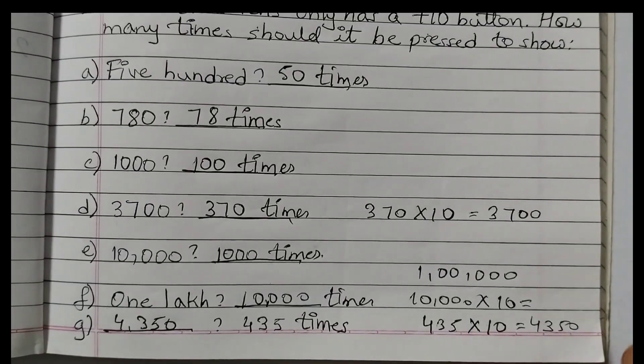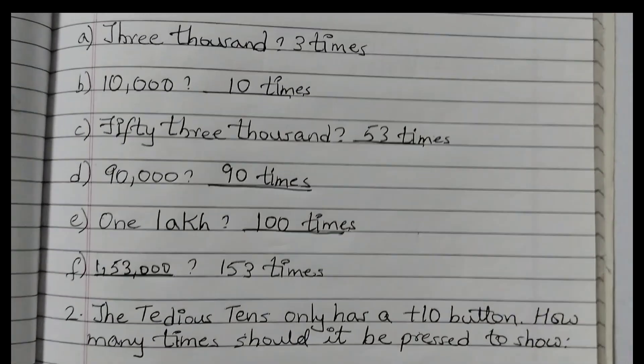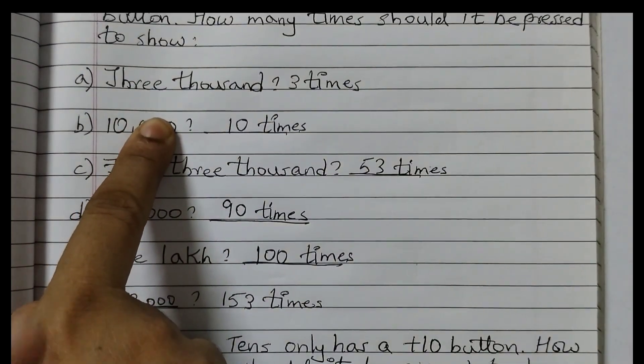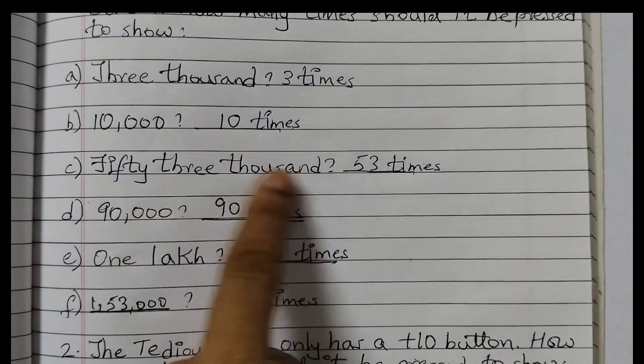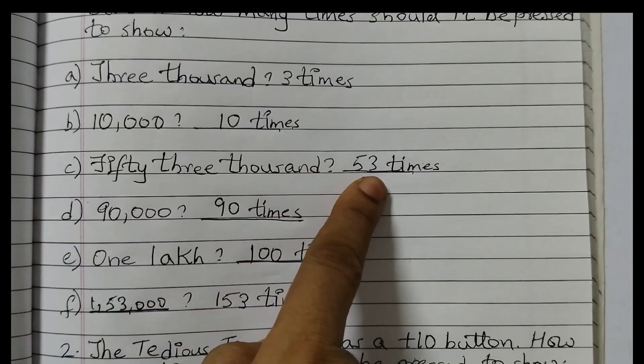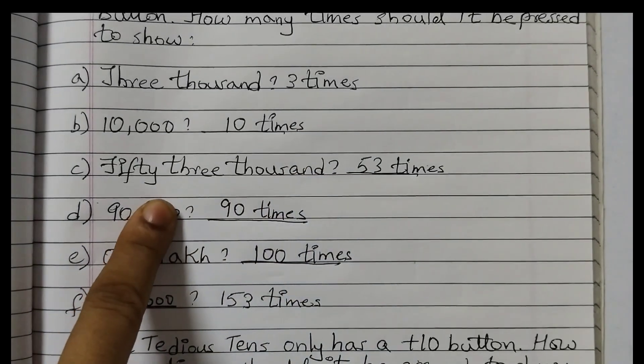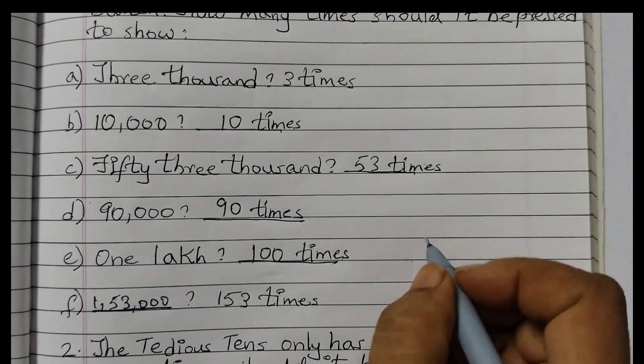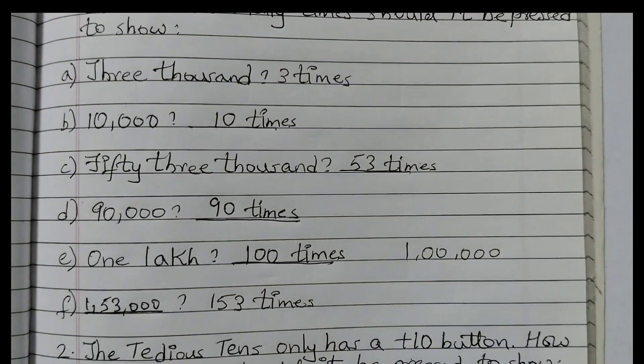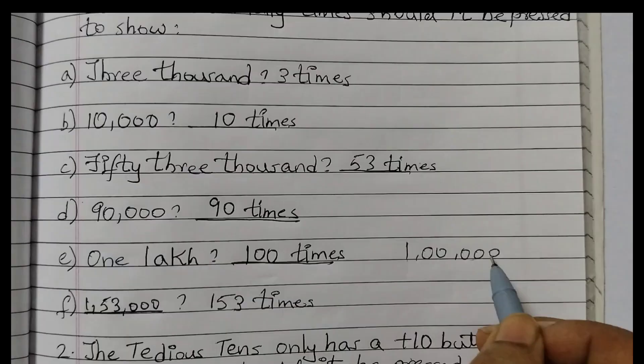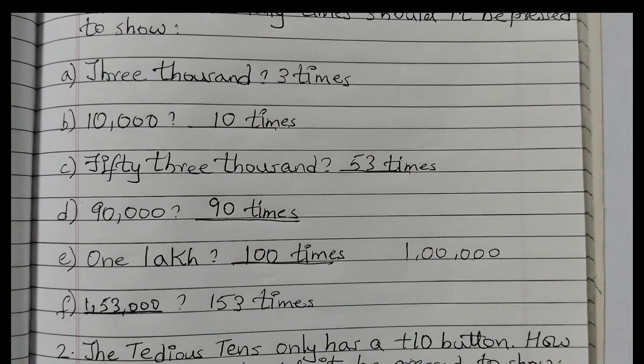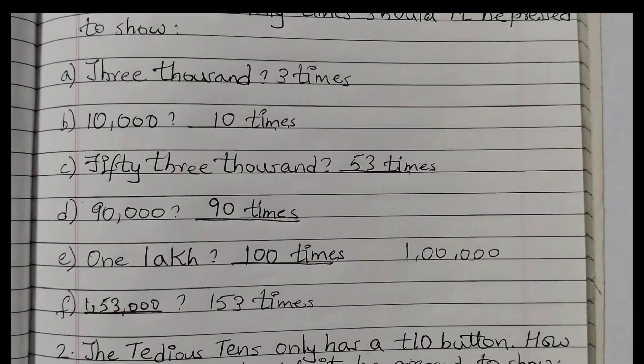Now this same trick you can use for 1,000 button also. Like for 1,000 you need to hide 3 zeros. So if you hide 3 zeros, you will get 10. 53,000, so if you hide 1,000, then you will get 53. 3 zeros, hide this, you will get 90. 1 lakh. See there are 5 zeros. We will hide 3 zeros. Because this is 1,000, right? So this will be 100 times. So the same trick you can use for 1,000.